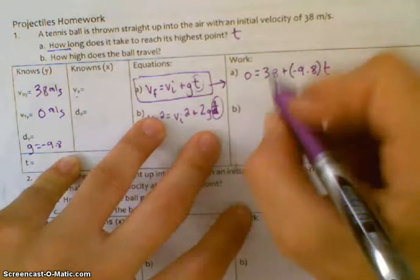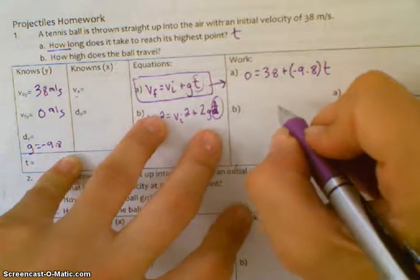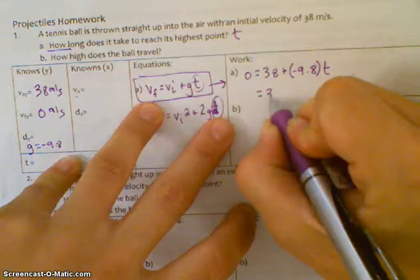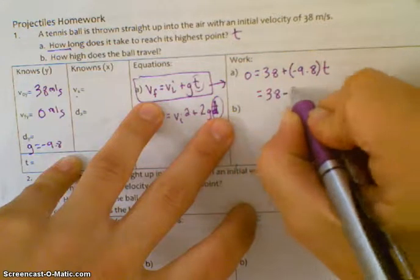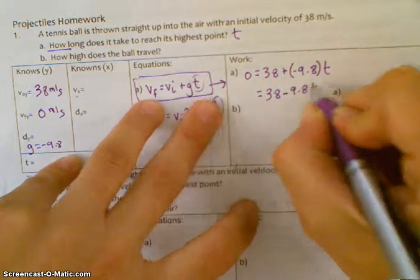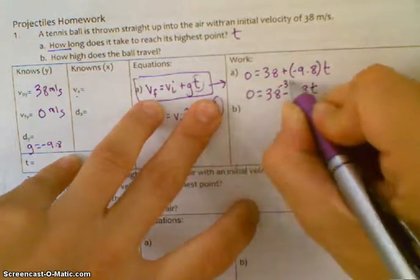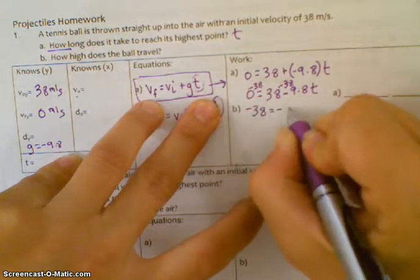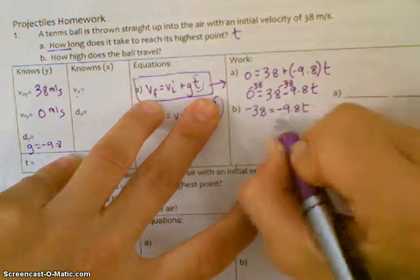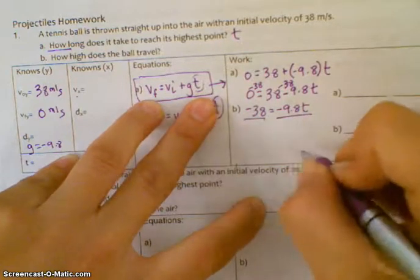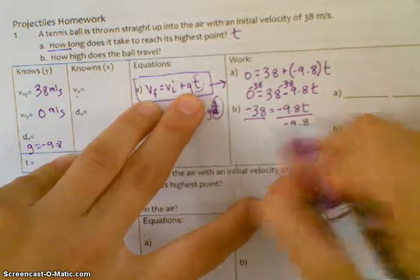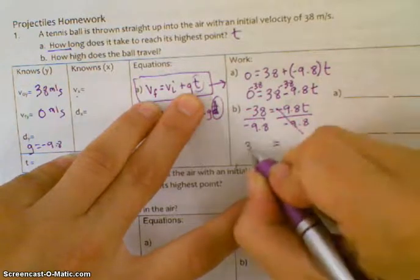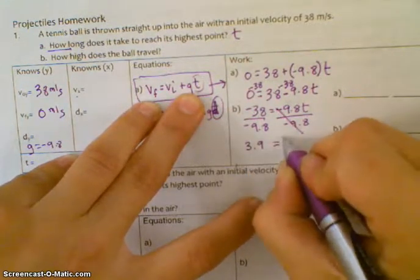Now it's a little bit of algebra. I've got to solve to get t by itself. Minus 38 over here and minus 38 over here. Divide both sides by negative 9.8 to get t by itself. Negative 38 over negative 9.8. Three point nine, three point nine you say? Yes. Is that your final answer? Yes.